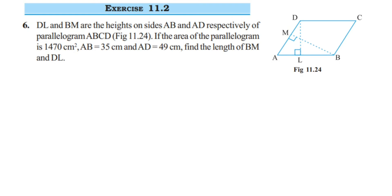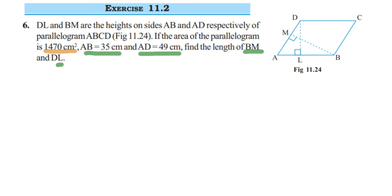The area of the parallelogram is given as 1470 cm². They have also given the base AB and another base AD. We don't need to find the area — it's already given. We have to find BM and DL, the two heights.